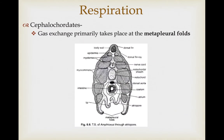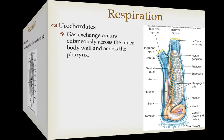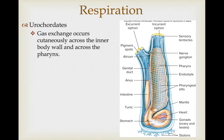Gas exchange in cephalochordates primarily takes place through ventral body extensions called metapleural folds. They have well-developed gill arches, but the gill arches are primarily associated with feeding and not as much with respiration. In urochordates, gas exchange occurs across the inner body wall and also across the pharynx and associated gill slits.